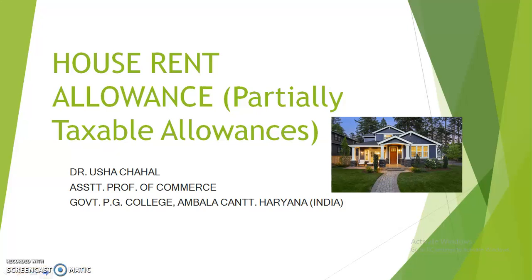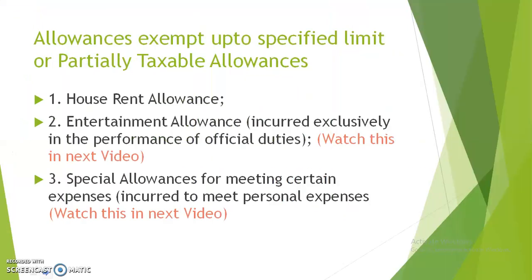Hello learners. In this video we will discuss house rent allowance. It comes under partially taxable allowances — allowances exempt up to a specified limit. Under this category, three allowances are considered: house rent allowance, entertainment allowance, and special allowances for meeting certain expenses.